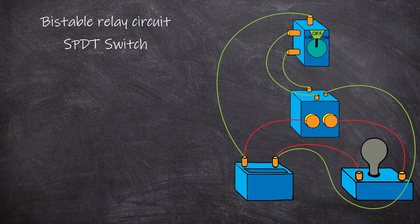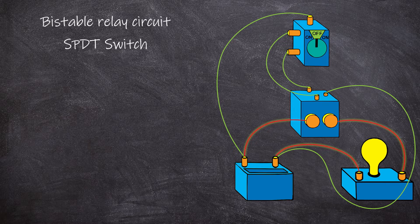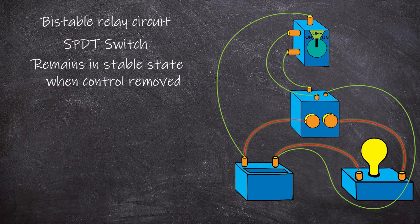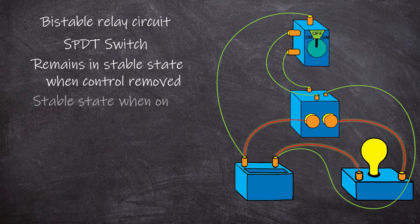Let's operate the circuit. When we turn the switch momentarily to one of the on positions, the control circuit is closed and the relay closes the operational circuit, turning on the light. Here, however, when the switch returns to off and the control circuit is opened, the light remains on. Now, let's remove the switch and control wiring as we did in the previous example — the light remains on. When we put the control components back in place again as they were, nothing changes. This demonstrates that the relay is in a stable state.